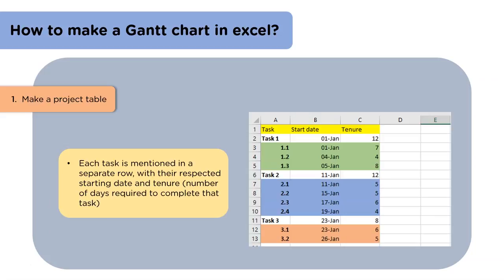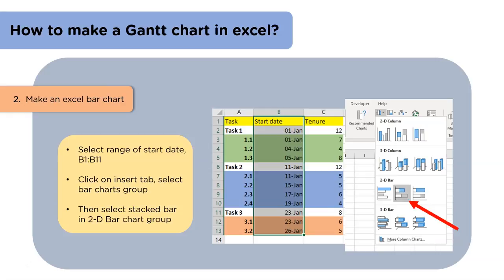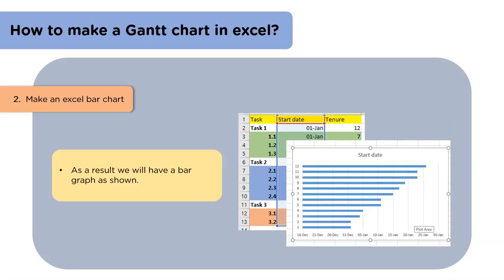The first step is to make a project table. We have several rows and columns — here we have three columns. In the first column we have the tasks, in the second we have our start date, and in the third column we have the duration or tenure of the task. The second step is to make a bar chart in Excel. For this, we will select the entire second column, then go to the insert tab and click on the bar graph chart. There we can select the stacked bar graph in 2D bar charts. As a result, we will have the bar graph on the screen.